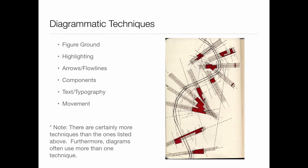Now let's look at some actual diagram types and examples of each. One of the big things about diagramming is that no matter how much I can say these are the six techniques, the truth is there are a lot more, and most of the time they're all intermingled. So while I might say arrows and flow lines are one category, a lot of times diagrams use multiple strategies together, and images cross over between categories.